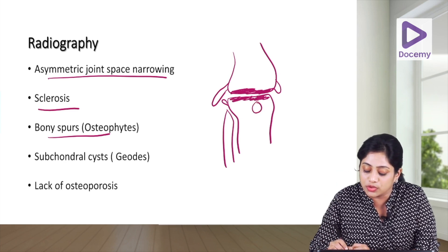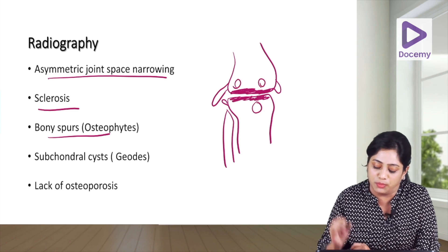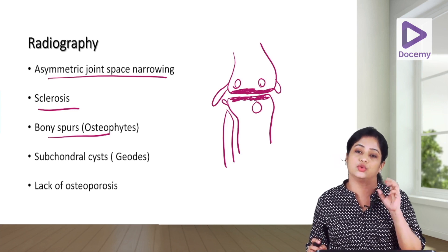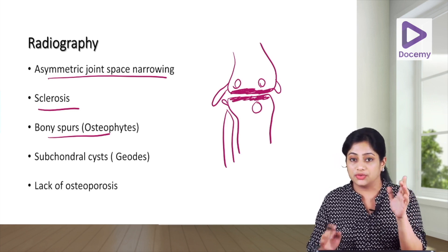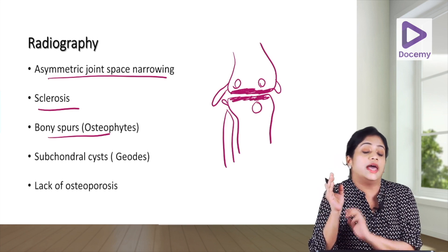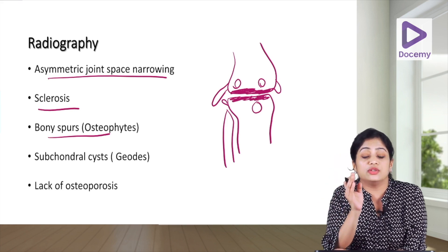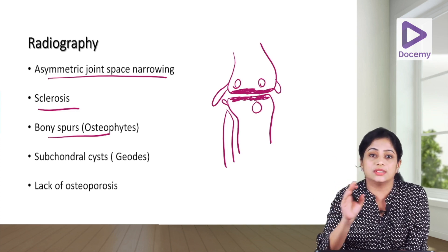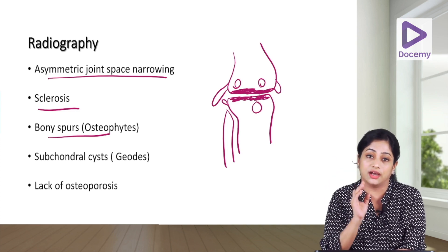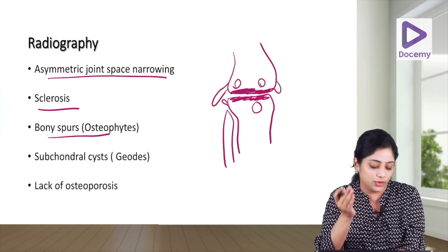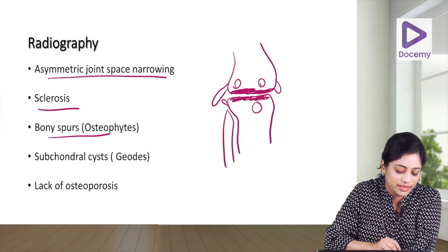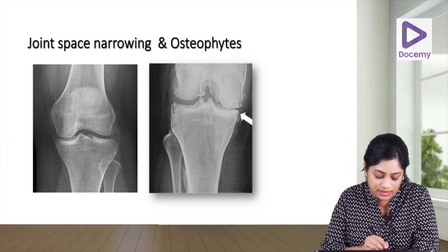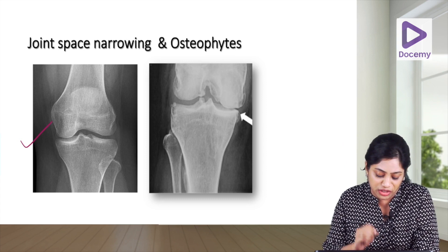Other X-ray findings include subchondral cysts, formed by synovium invaginating into the bone, commonly seen in osteoarthritis. One more important feature is the lack of osteoporosis — even though OA is a disease of old age, osteoporosis is not characteristic. Instead, juxtaarticular osteosclerosis is the finding.